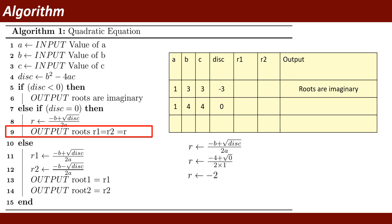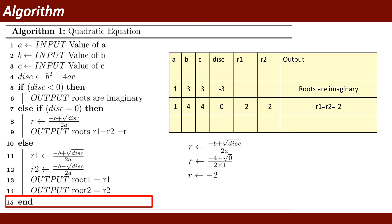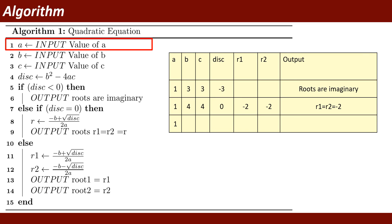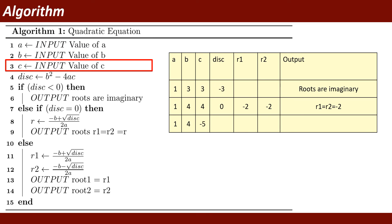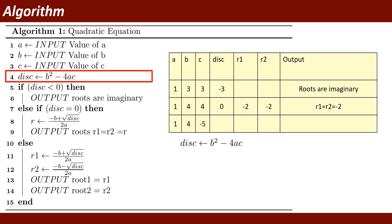It displays r1 = r2 = minus 2, then the program ends. For the third dry run, A = 1, B = 4, and C = minus 5. The program calculates disk = B squared minus 4AC.